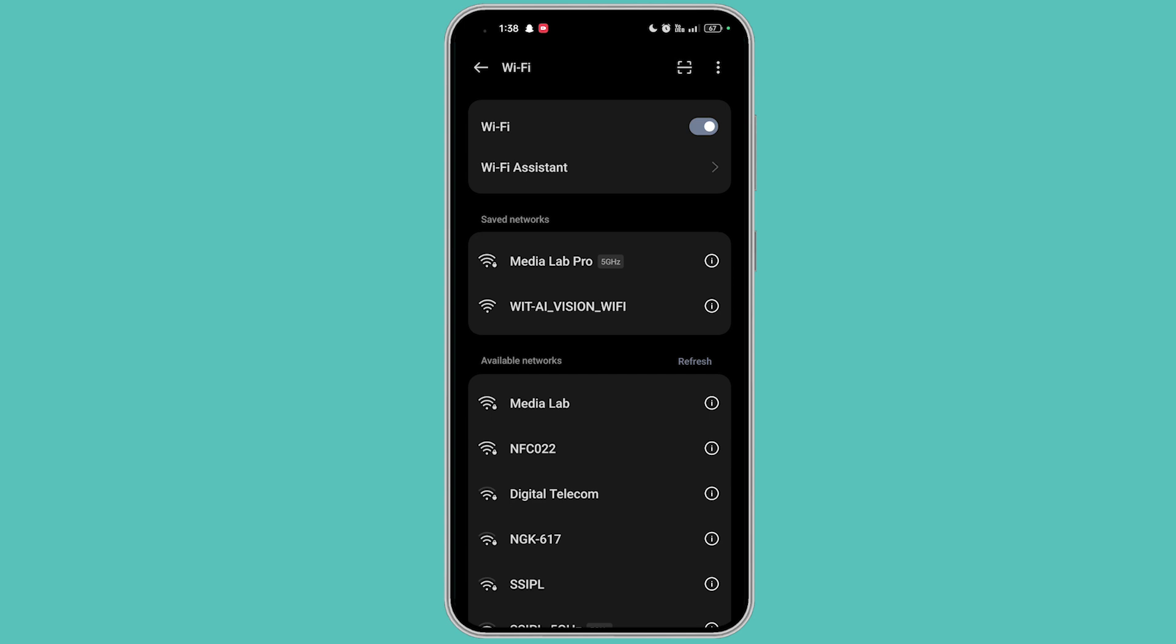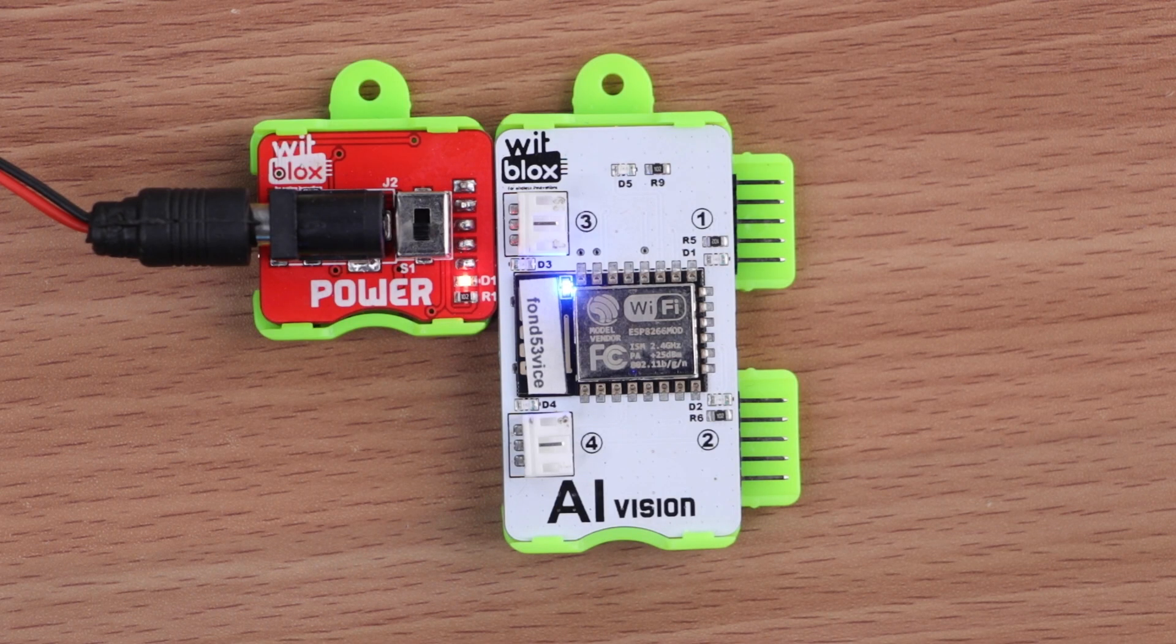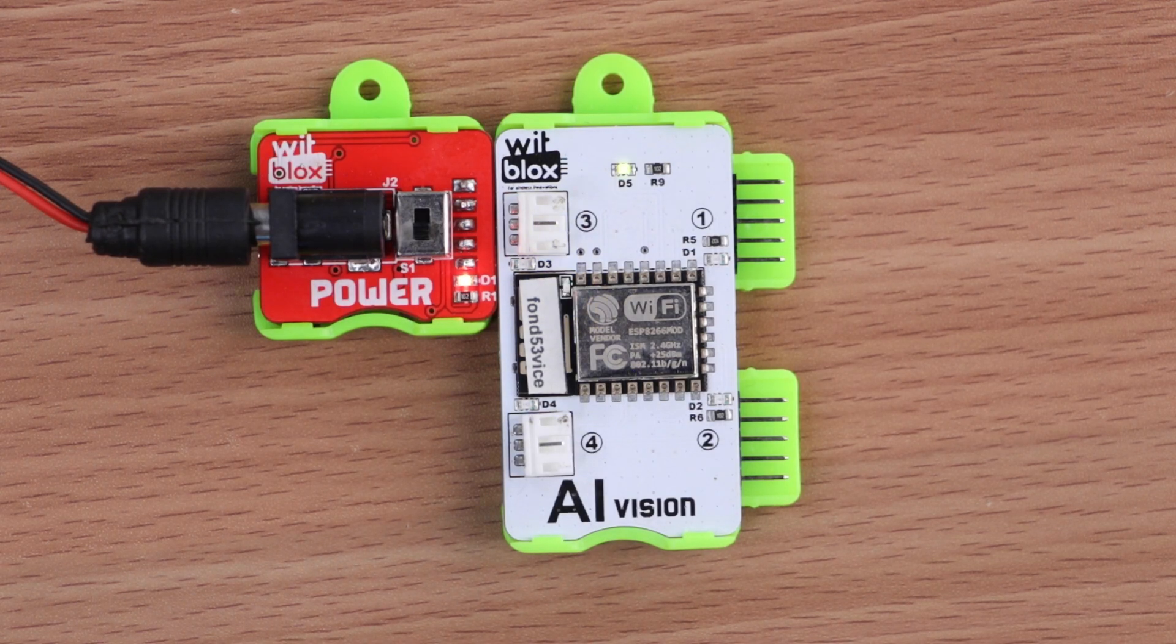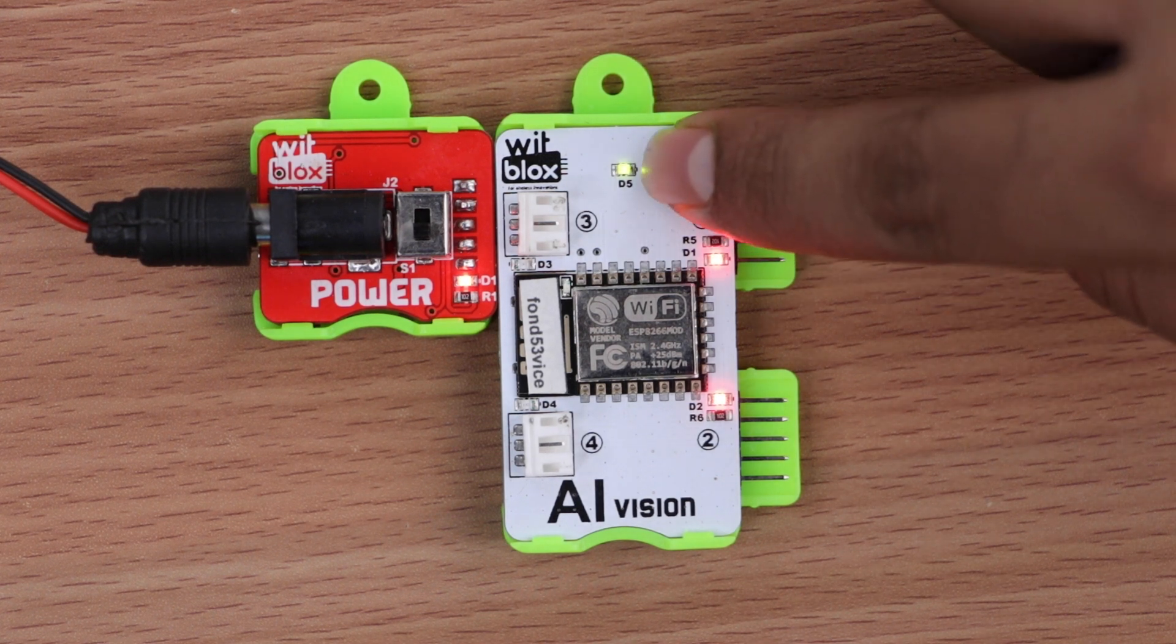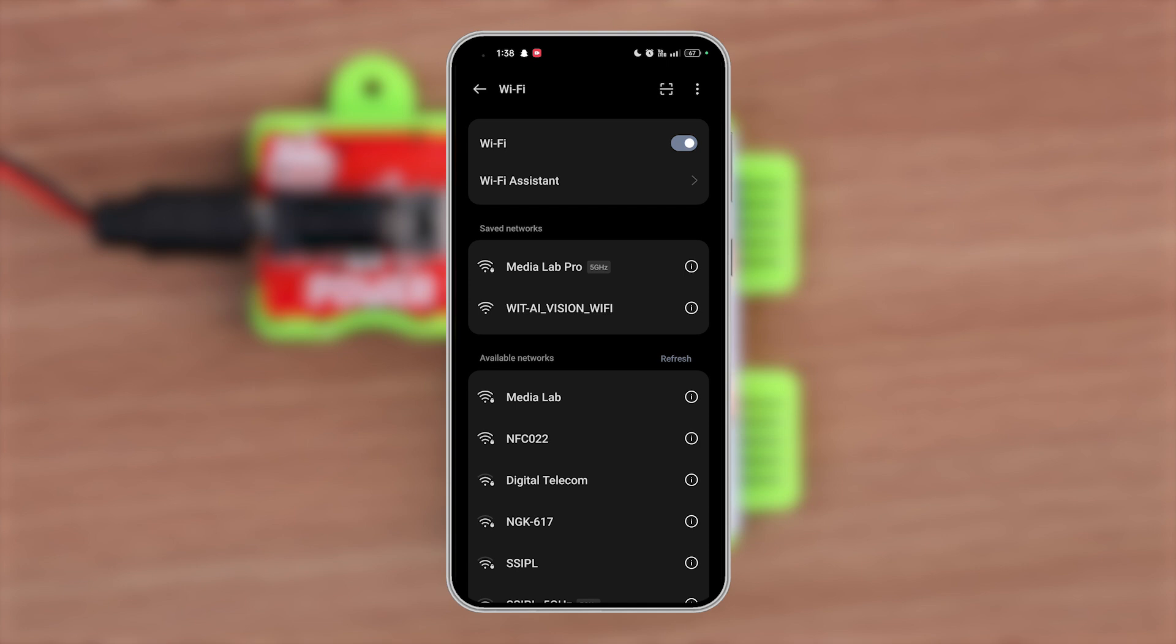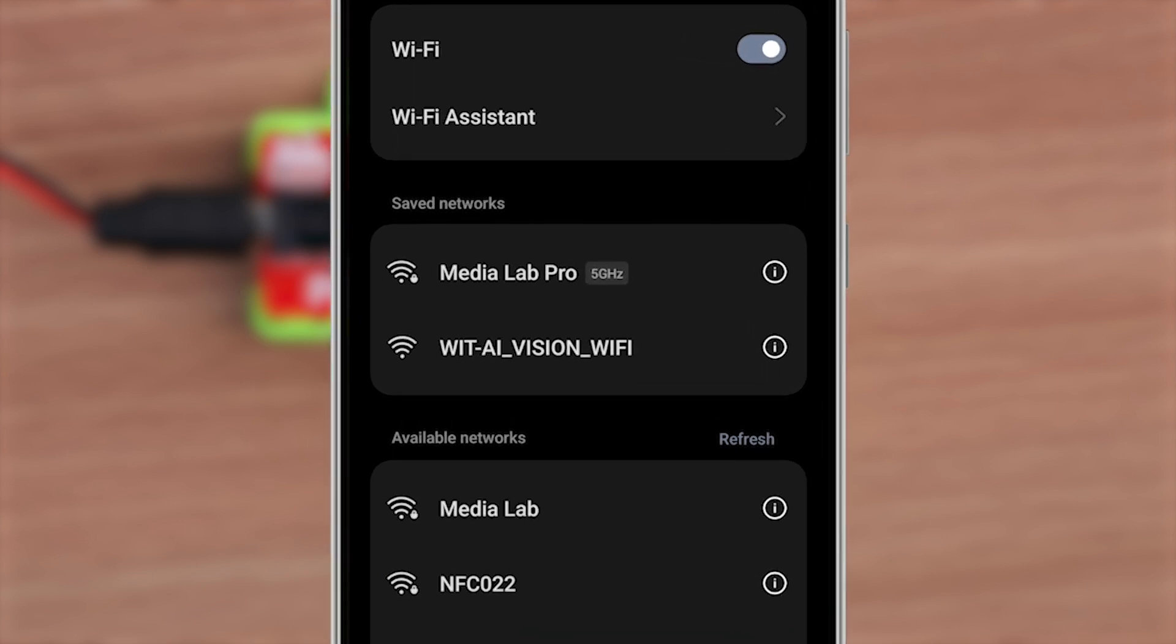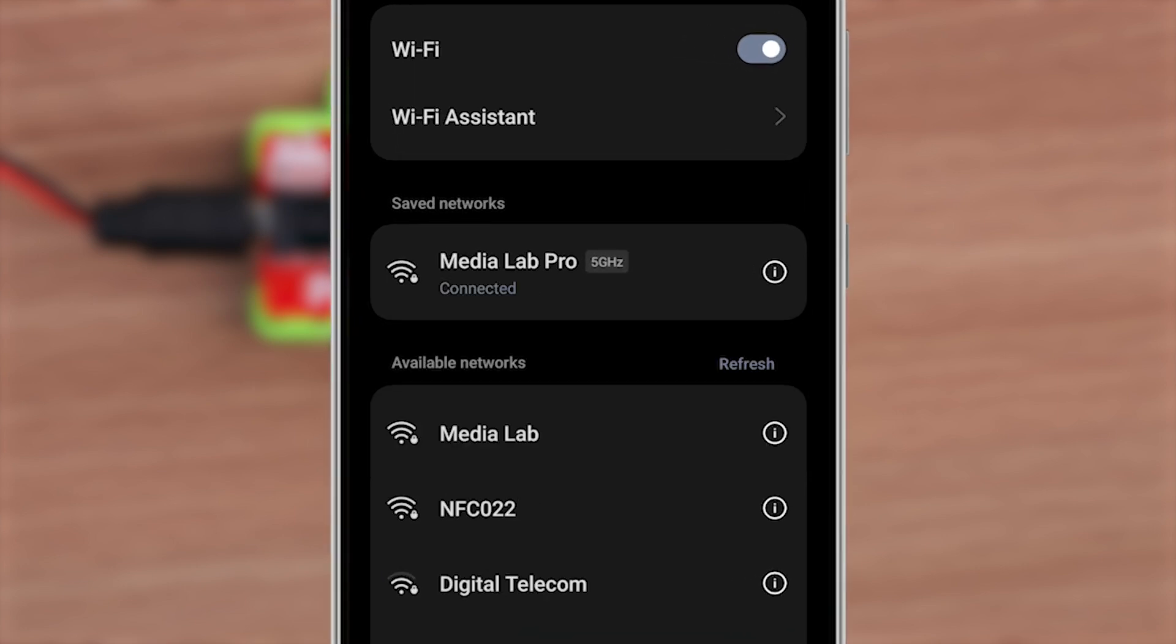If the password is entered correctly, it will be indicated with a red slash green light on the AI blocks. Now connect your phone back to the internet using mobile data or Wi-Fi, not the AI Vision one.